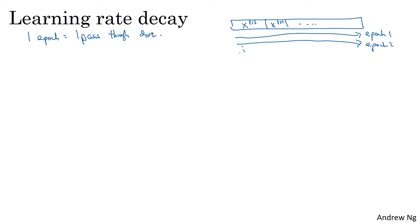So one thing you could do is set your learning rate alpha to be equal to one over one plus a parameter, which I'm going to call the decay rate times the epoch number. And this is going to be times some initial learning rate alpha zero. Note that the decay rate here becomes another hyperparameter which you might need to tune. So here's a concrete example.